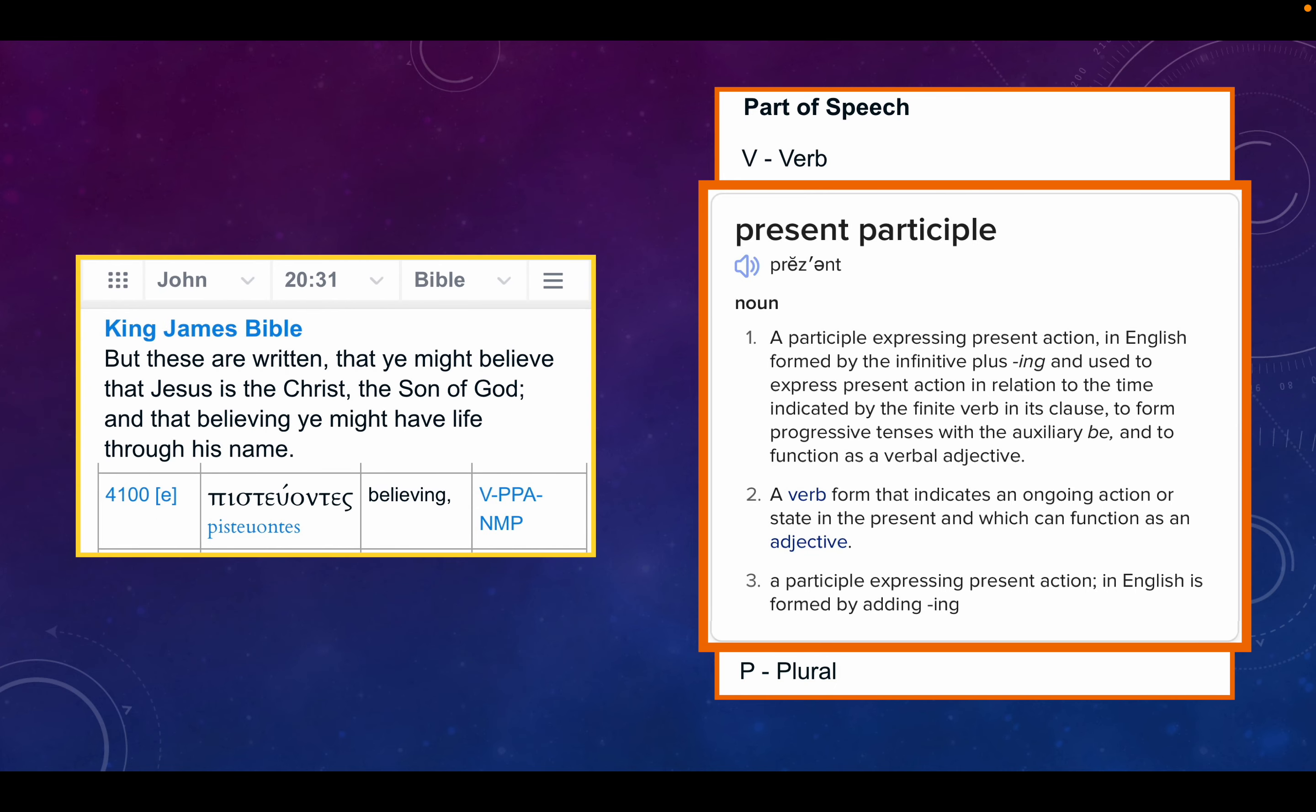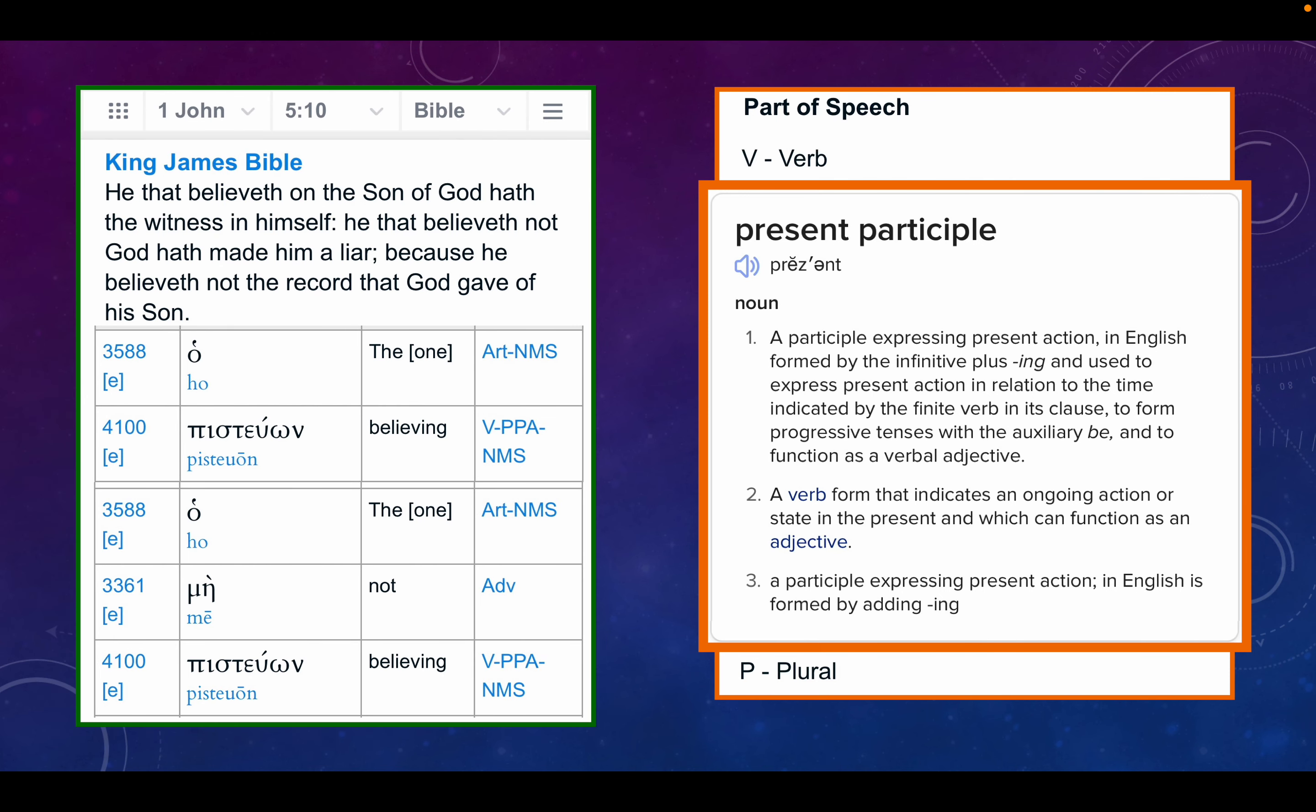John 20:31. But these are written that ye might believe that Jesus is the Christ, the Son of God, and that believing, ye might have life through his name. Pisteontes, believing, present participle, ongoing belief. Not just I believed and I stopped believing. No, no, no. I believe and I keep believing and believing and believing as I'm alive. Now let's look at 1 John, chapter 5, verse 10. He that believeth on the Son of God hath the witness in himself. He that believeth not God hath made him a liar, because he believeth not the record that God gave of his Son. O pisteon, the believing one, o me pisteon, the one not believing. Again, present participle.